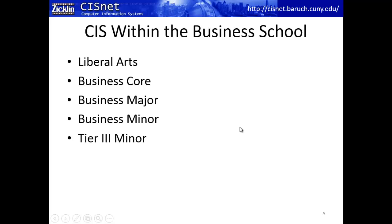CIS is typically taught within the business school here at Baruch College — the Zicklin School of Business. Everyone takes liberal arts courses: science, math, English, foreign language, and so on. Then there's the business core — about half a dozen to a dozen courses that everyone takes: accounting, finance, macroeconomics, microeconomics, and so on. What we're focusing on today is choosing CIS as a business major. We'll do another video about the minor and the tier three minor.